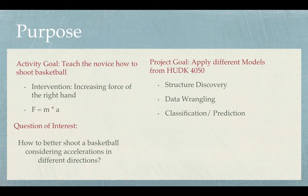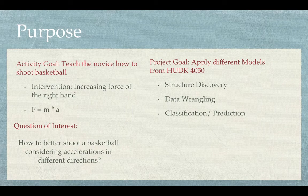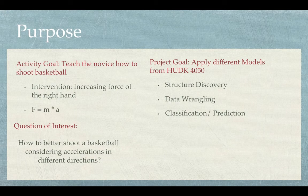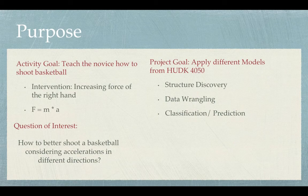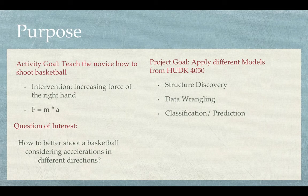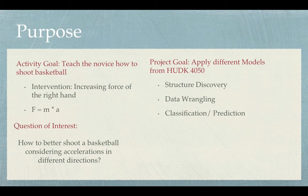The goal of this activity is to teach novice how to shoot a basketball. Since there are so many factors that could contribute to a successful shot, we decided to only discuss one factor, that is the force. Thus, we will use the linear acceleration sensor to trace the acceleration that the player used when shooting. Our question of interest is how to better shoot a basketball considering accelerations in different directions. We use acceleration as an indicator of force because we have the formula F equals m times a, and since we are using the same ball, the mass is the same, so acceleration is the indicator for force.